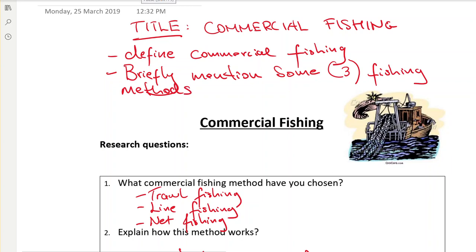Now this may include your own method as well. So let's say the three fishing methods you chose was troll fishing, line fishing, and net fishing. So it briefly talked about what all of these types of fishing are. So you started, commercial fishing is this, and the types are these three types and how do they work briefly.